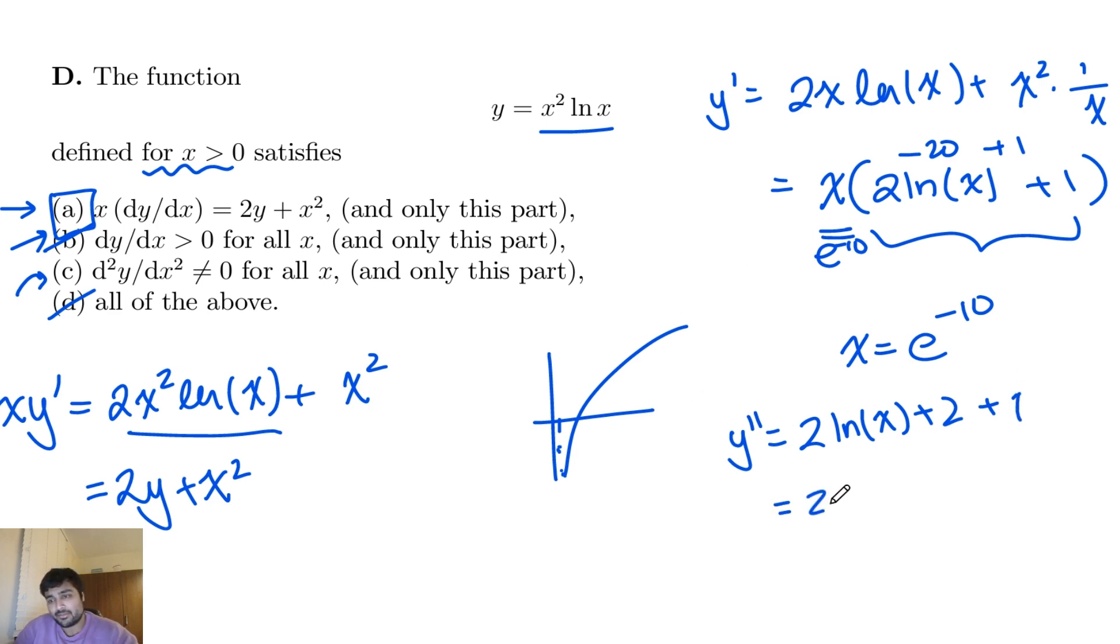And so that's 2 ln x plus 3, which definitely is not 0 for all x. It might be 0 for one value of x, but it's not equal to 0 for all x. So the answer is definitely A.